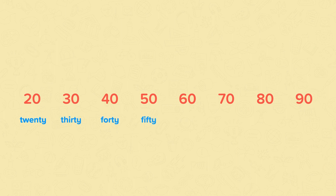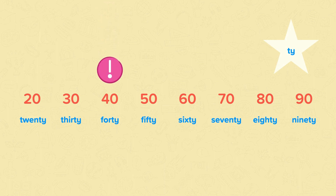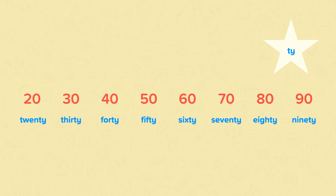Here we have 20, 30, 40, 50, 60, 70, 80 and 90. Do you notice that they all end in TY? The multiple of 10 that you need to watch out for is 40. It's easy for people to think that it's the number 4 with TY on the end, but this is wrong. There is no U in 40. Now if you can spell all of these multiples of 10 and the numbers 1 to 9, then you will be able to spell every number from 20 to 100. Pause the video and practice spelling these multiples of 10.